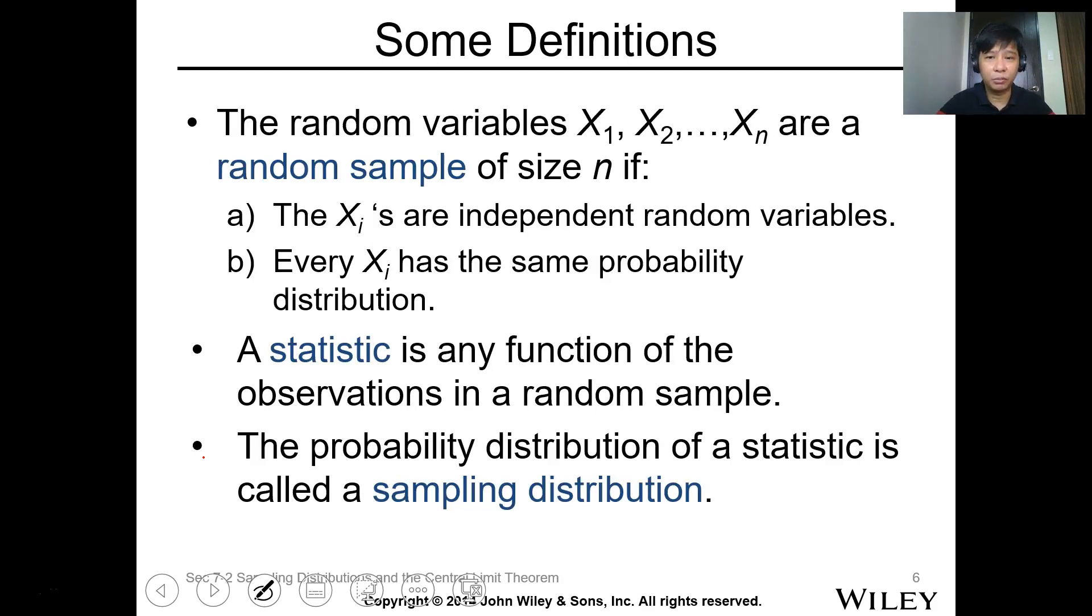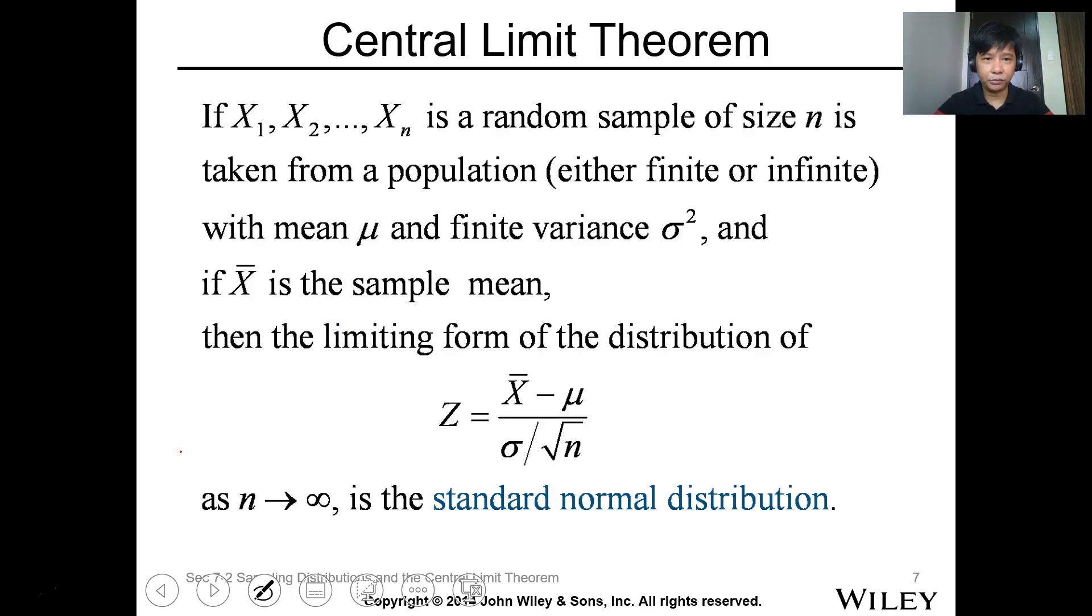So some definitions. A random variable x1 to xn are random sample of size n. The xi's are independent random variables. Every xi has the same probability distribution. The statistic is any function of the observation in a random sample, while the probability distribution of the statistics is called the sampling distribution.